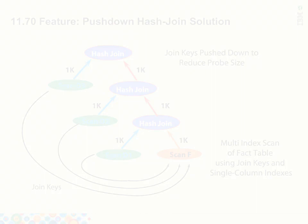In 11.70, we take advantage of the multi-index scan, as discussed previously, to reduce the number of rows being scanned from each of the dimension tables. By doing so, we push down the join keys to the fact table and reduce the rows scanned from the fact table to 1k instead of 1m, thus reducing the number of rows retrieved from the fact table and reducing the number of rows in each intermediate join to 1k rows. This is called the right deep tree method and provides significant savings in memory consumption and response time.